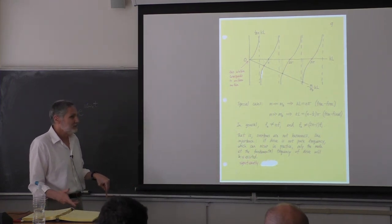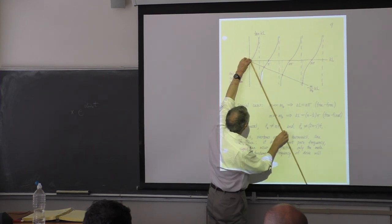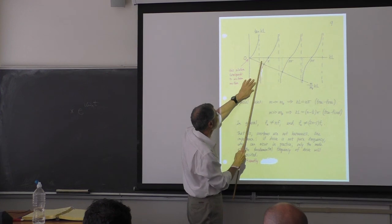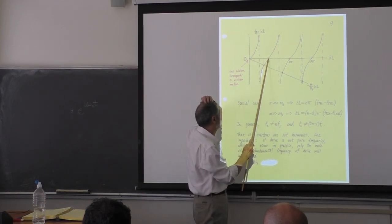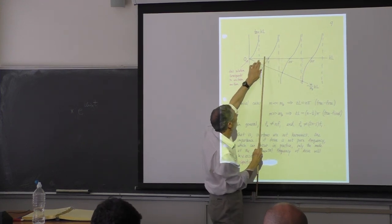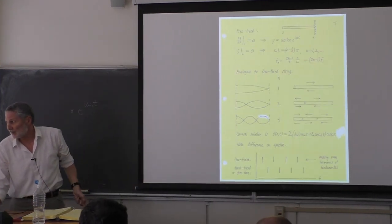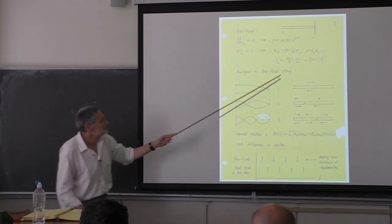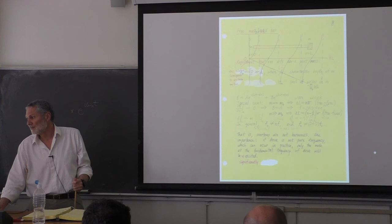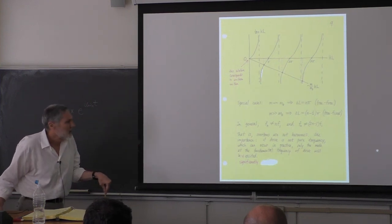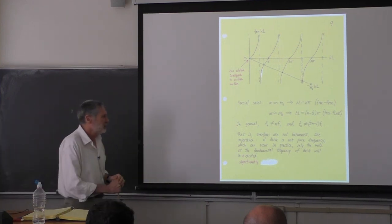Any questions? You can see why we do strings first — it really helps. The zero-frequency solution we rejected for a string can't be rejected here. For a bar out in space, a uniform translation at constant velocity is a valid mode at zero frequency — the math is returning something that can really happen.